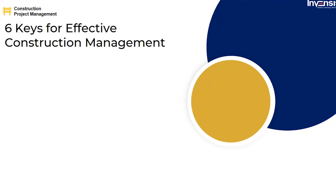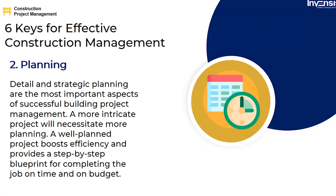The second key is Planning. Detail and strategic planning are the most important aspects of successful building project management — a more intricate project will necessitate more planning. A well-planned project boosts efficiency and provides a step-by-step blueprint for completing the job on time and on budget. During the planning phase, you'll generate deliverables, define goals, and set project milestones. You must consider what equipment will be required, how much personnel will be needed, how to coordinate subcontractors, and how to ensure all building materials are scheduled. Developing a safety plan, communication strategy, risk assessment, and response plan are also essential.